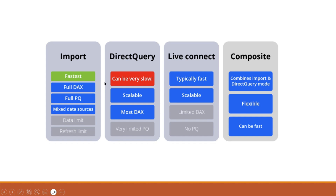Looking at the comparison: import is the fastest in terms of performance with full DAX support, full Power Query, mixed data sources supported, but has a data size limit. Direct query can be slow but is scalable, with most but not all DAX available. Live connection is typically fast and scalable. Composite mode combines import and direct query — it is flexible and can be fast, solving the storage limitation of import mode through direct query. Most organizations nowadays are using this composite model.